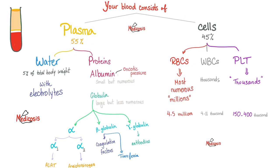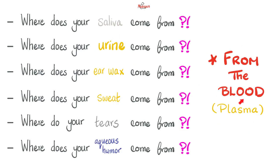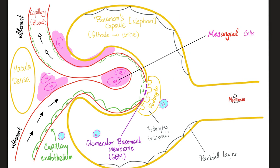Your blood is made of plasma and cells. When you're losing plasma proteins, that's nephrotic syndrome. When you're losing red blood cells, that's nephritic syndrome. All your body fluids come from the blood — urine is no exception. To make urine, we start with blood, filter it, and whatever ends up in the tubule without reabsorption ends up in the toilet.